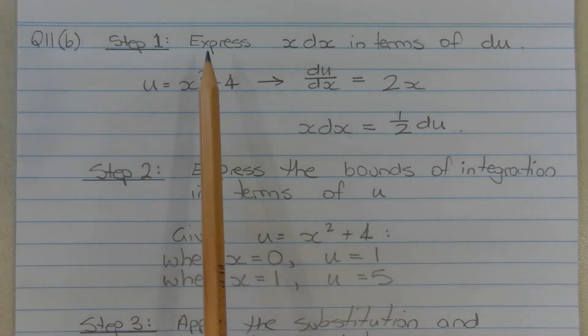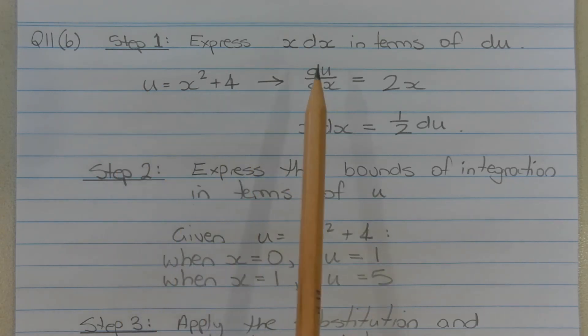The first step is to express x dx in terms of du. Given u is equal to x squared plus 4 and differentiating u with respect to x, we get du dx is equal to 2x. Multiplying both sides by the differential dx and dividing both sides by 2, we get x dx is equal to half du.